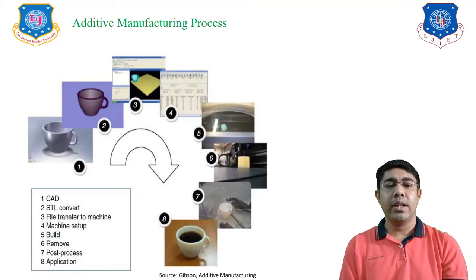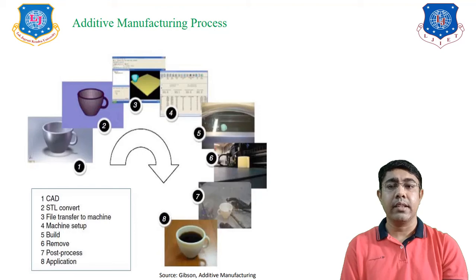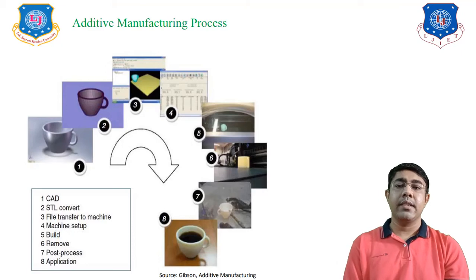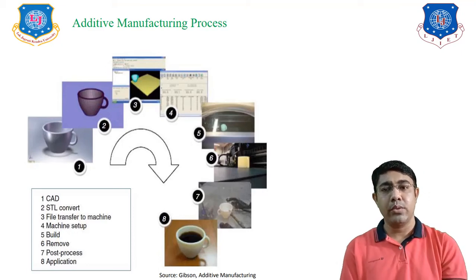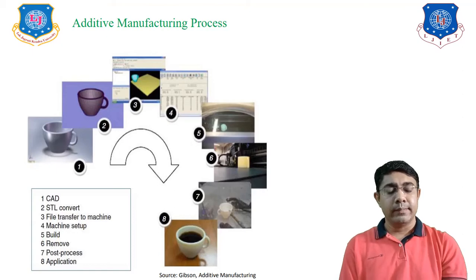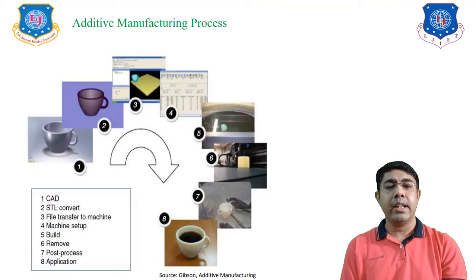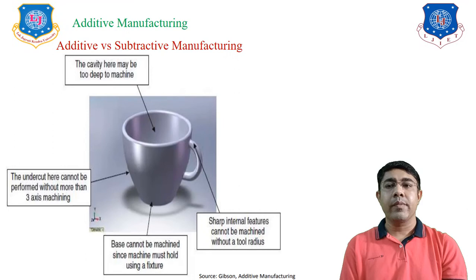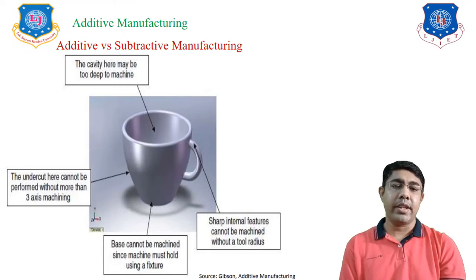Step eight is the application of the final part. So the steps of the additive manufacturing process are: create the CAD file, convert it to an STL file, transfer the file to the machine, prepare the machine setup, build the component, remove the component and supporting materials, post-process and finish the product, and then apply it. Next is additive versus subtractive manufacturing.